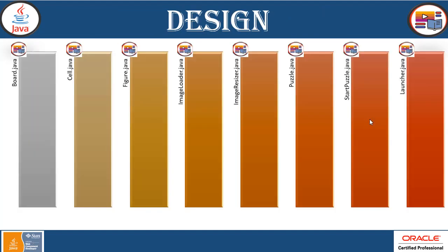For the design, you can see we have Board.java, Cell.java, Figure.java, ImageLoader, ImageResizer, PuzzleStart, Puzzle, and Launcher — all linked to each other in a structured form. Board.java creates the complete look and feel with a layout. Cell.java represents the tiles, so if the user selects easy mode, there will be a minimum number of tiles for that image.